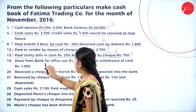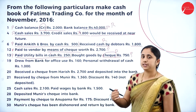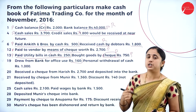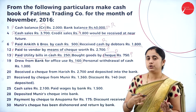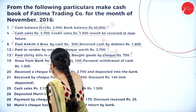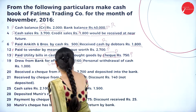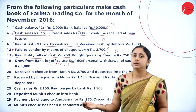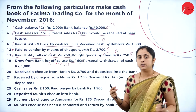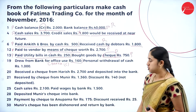Next, drew from bank for office use 160. You are withdrawing cash from the bank — this is a transaction between cash and bank, so it is considered a contra entry. For a contra entry, you record it twice: once on the payment side and once on the receipt side — one for the cash transaction and another for the bank transaction.